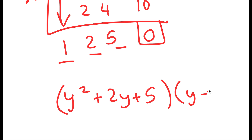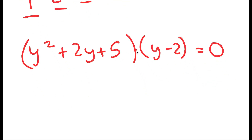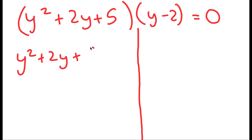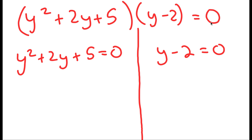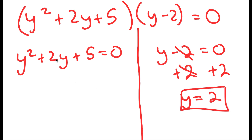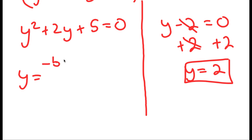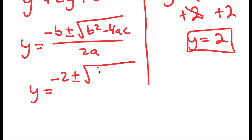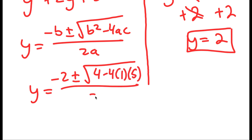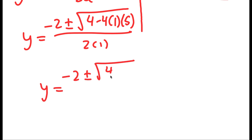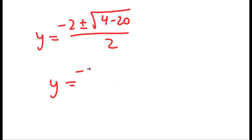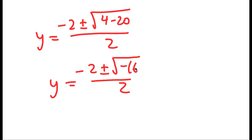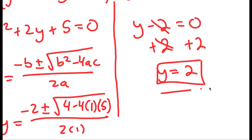So I have y squared plus 2y plus 5 times y minus 2 is equal to 0, giving two equations: y squared plus 2y plus 5 equals 0, and y minus 2 equals 0. For y minus 2 equals 0, y equals 2. For y squared plus 2y plus 5 equals 0, using the quadratic formula I get y equals negative 2 plus or minus the square root of 4 minus 20, all over 2, which is negative 2 plus or minus the square root of negative 16 over 2. Because we have the square root of a negative number, we cannot use those solutions, meaning we can only use y equals 2.